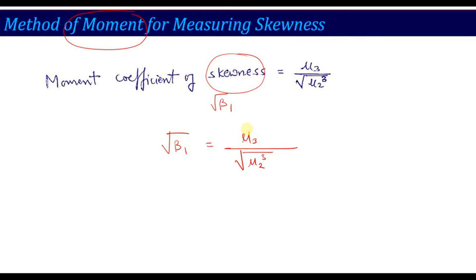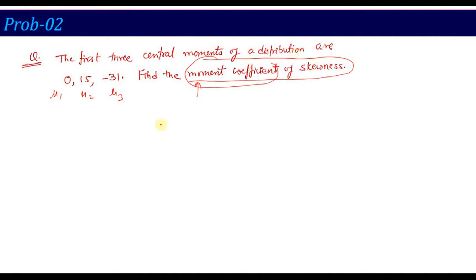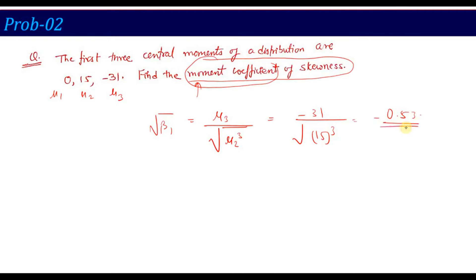Your question types are not new — we have already seen all the moment calculation questions. Here is a straightforward direct question: the first three central moments of a distribution are 0, 15, and -31. Find the moment coefficient of skewness. You have μ₁=0, μ₂=15, μ₃=-31. Directly applying √β₁ = μ₃ / √(μ₂³), putting the value of μ₃ = -31 and μ₂ = 15, you will get the answer as -0.53.